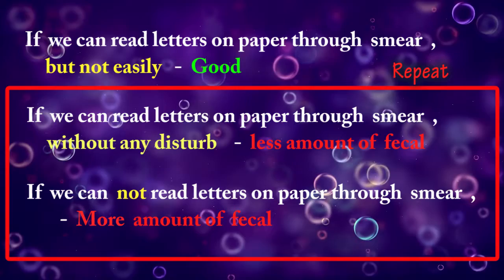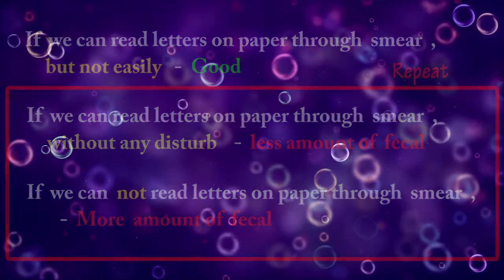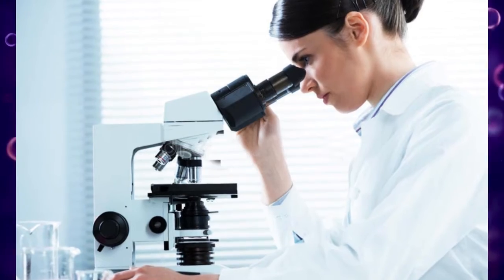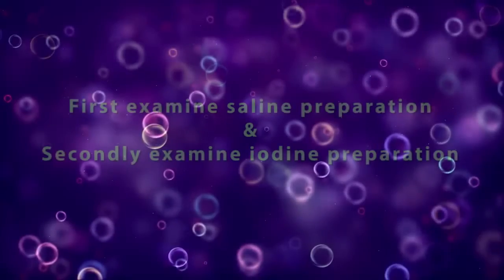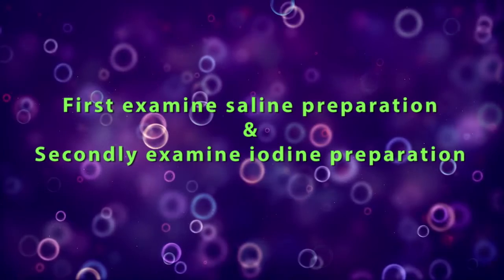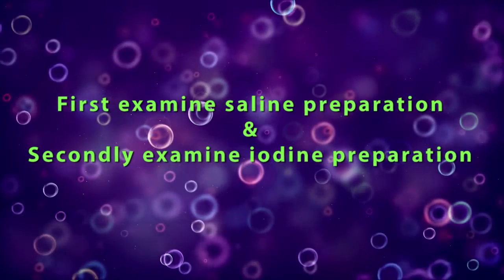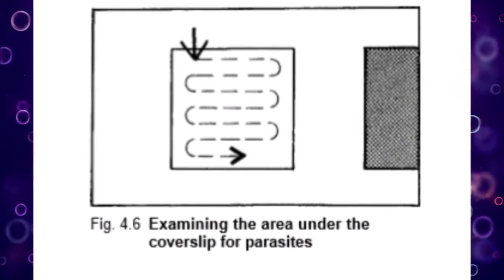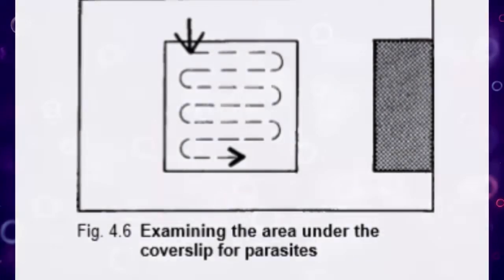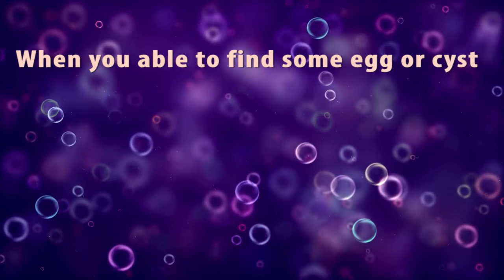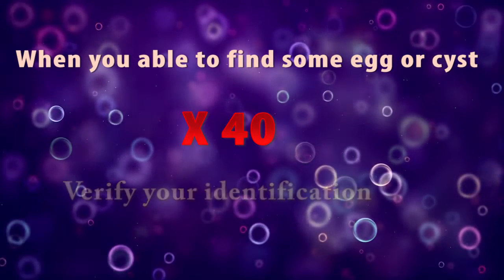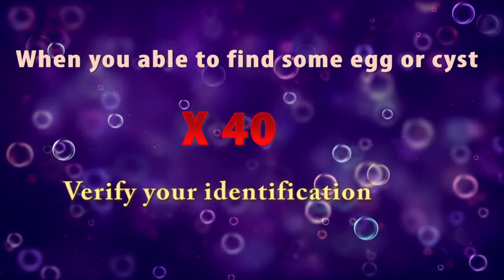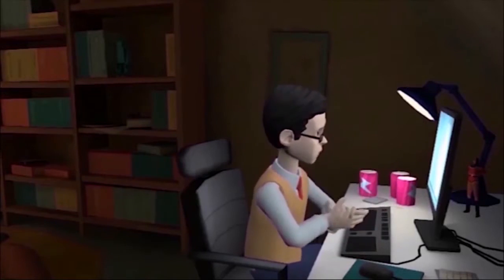In both cases we have to repeat the slide preparation. The next step is to examine the preparations under the microscope. We should first examine the saline preparation and secondly examine the iodine preparation. Start at the top left-hand corner on the edge of the coverslip using the 10x objective. When you are able to find some egg or cyst, switch to the 40x objective and verify your identification.